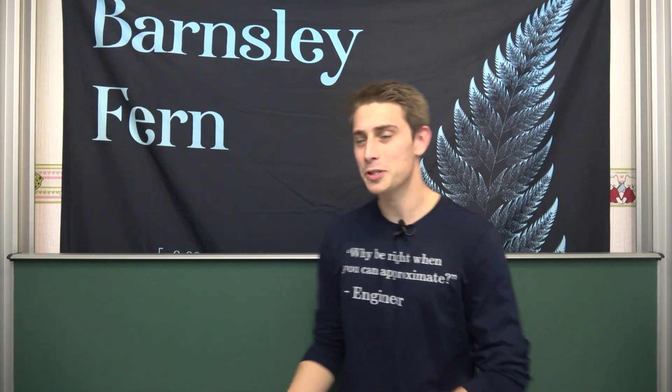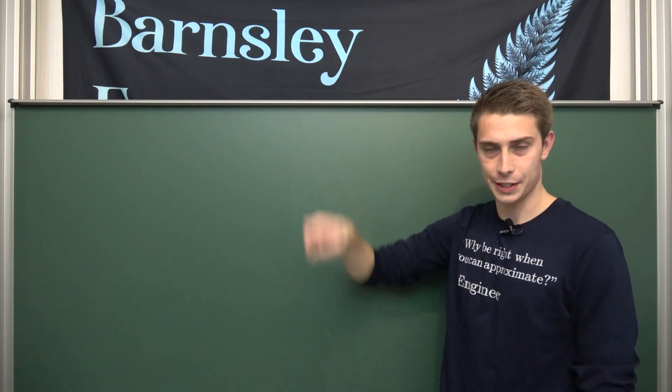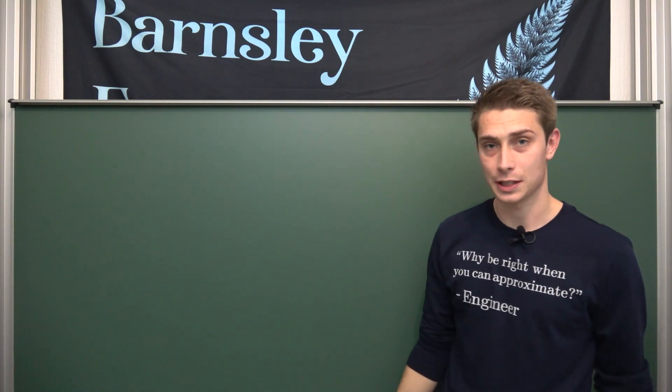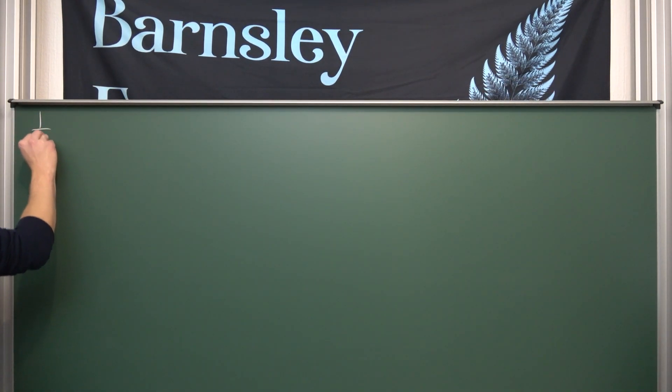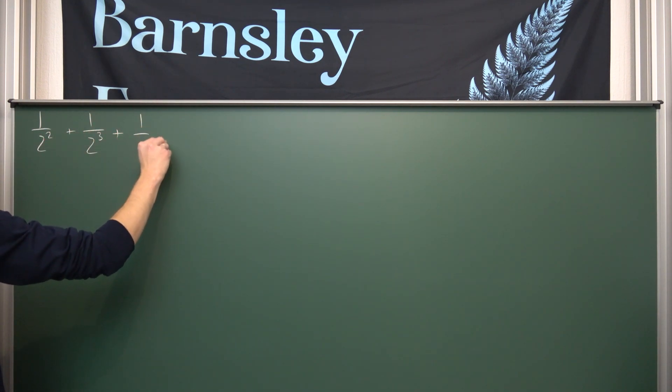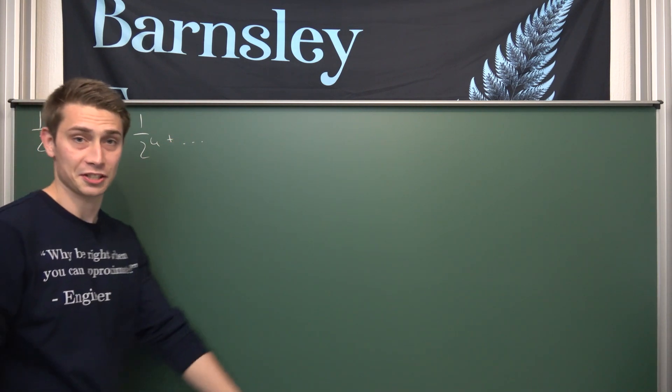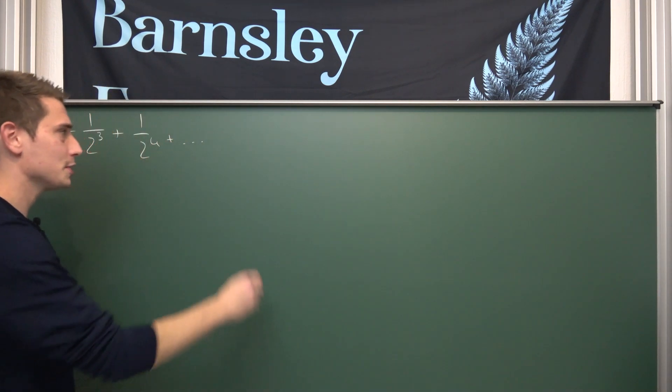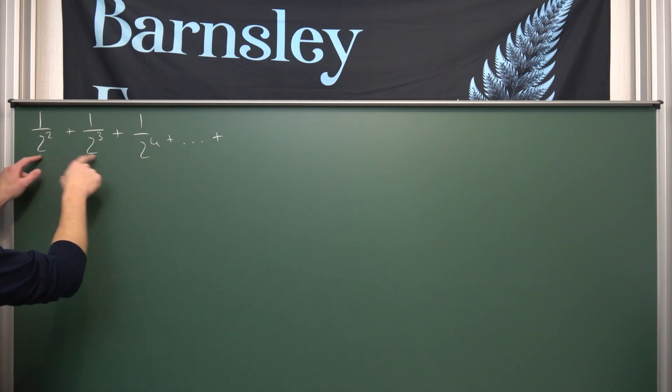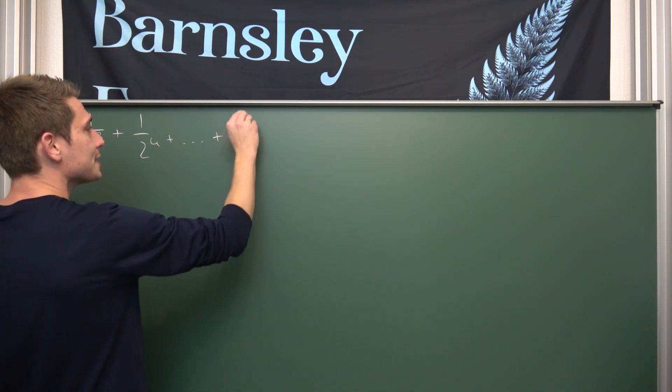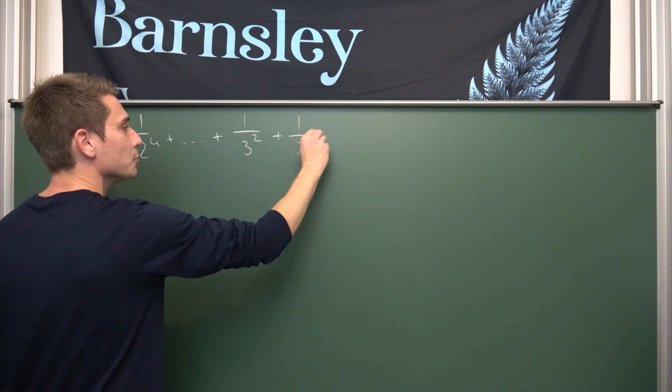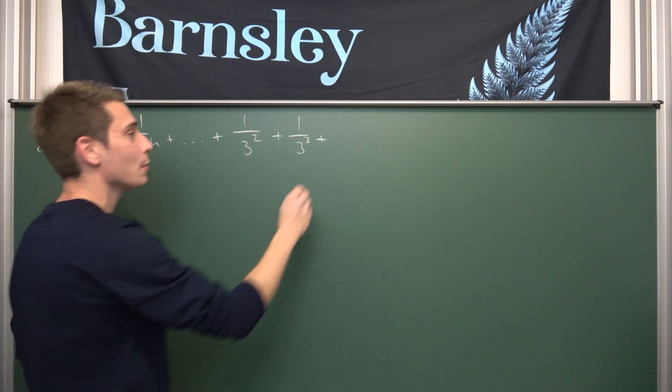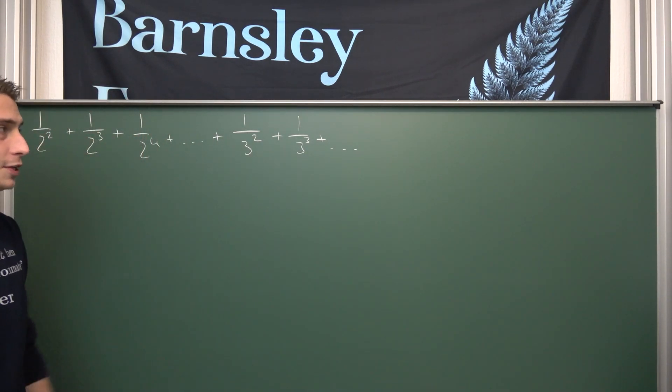We are going to take a look at an infinite series today and it looks the following. There's a very nice pattern behind it. It's 1 over 2 squared plus 1 over 2 to the 3rd power plus 1 over 2 to the 4th power, blah blah blah, up until infinity. But it doesn't end there because it continues. Now imagine we start off with a 2. Now we are going to go ahead and say 1 over 3 squared plus 1 over 3 cubed plus 1 over 3 to the 4th power, blah blah blah.